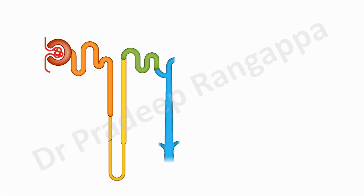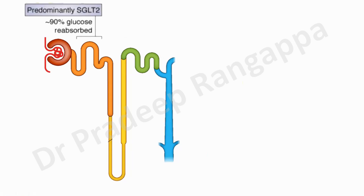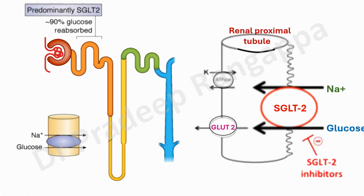Why SGLT2 inhibitors? As the name implies, it is the sodium-glucose transporter inhibitor. From a physiological standpoint, 90% of glucose is reabsorbed in the proximal convoluted tubule — and that is where SGLT2 acts. SGLT2 is required for the reabsorption of sodium and glucose. Inhibition of SGLT2 leads to failure of reabsorption of sodium and glucose, and they get secreted into the tubules, resulting in excess glycosuria and natriuresis.